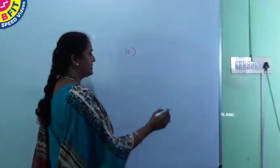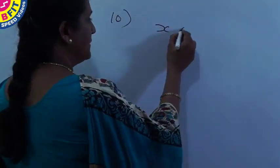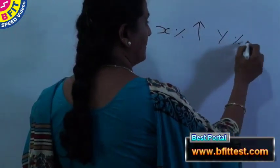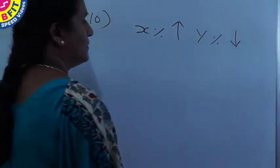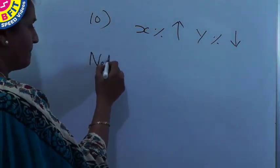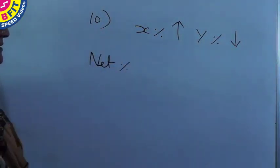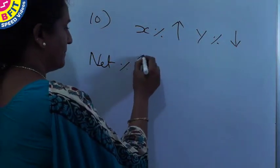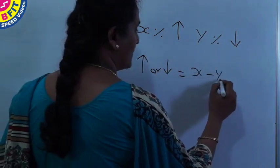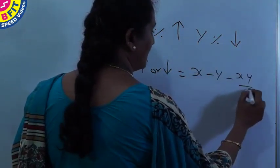So here first the price is increased by X percent, and then a discount of Y percent is given. So the net percentage increase or decrease is found by X minus Y minus XY by 100.